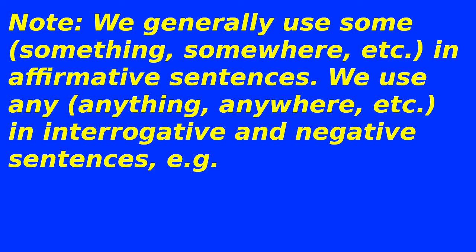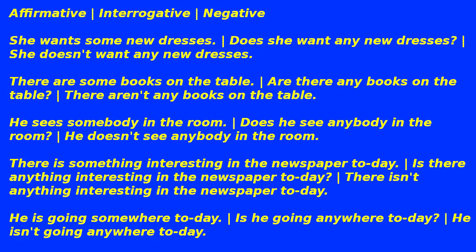Note: we generally use 'some', 'something', 'somewhere', etc. in affirmative sentences; we use 'any', 'anything', 'anywhere', etc. in interrogative and negative sentences. E.g.: 'She wants some new dresses' / 'Does she want any new dresses?' / 'She doesn't want any new dresses.' 'There are some books on the table' / 'Are there any books on the table?' / 'There aren't any books on the table.' 'He sees somebody in the room' / 'Does he see anybody in the room?' 'There is something interesting in the newspaper today' / 'Is there anything interesting in the newspaper today?' / 'He is going somewhere today' / 'Is he going anywhere today?' / 'He isn't going anywhere today.'